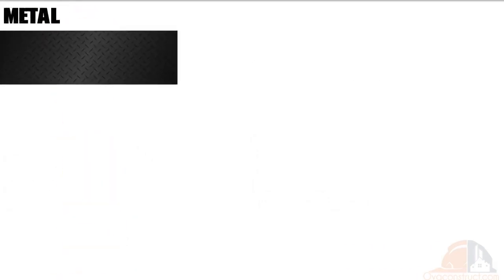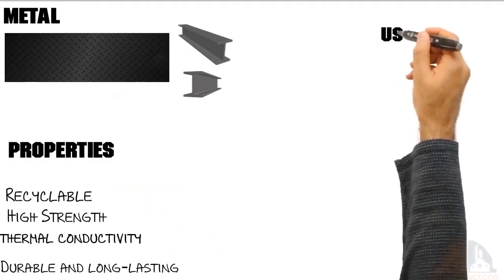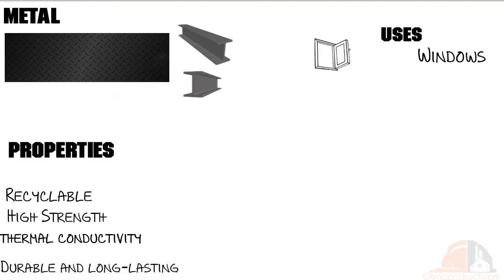Metal is a solid material that is generally hard, shiny, and malleable. A variety of metals used in construction are aluminum, stainless steel, iron, titanium, copper, brass, and mild steel.